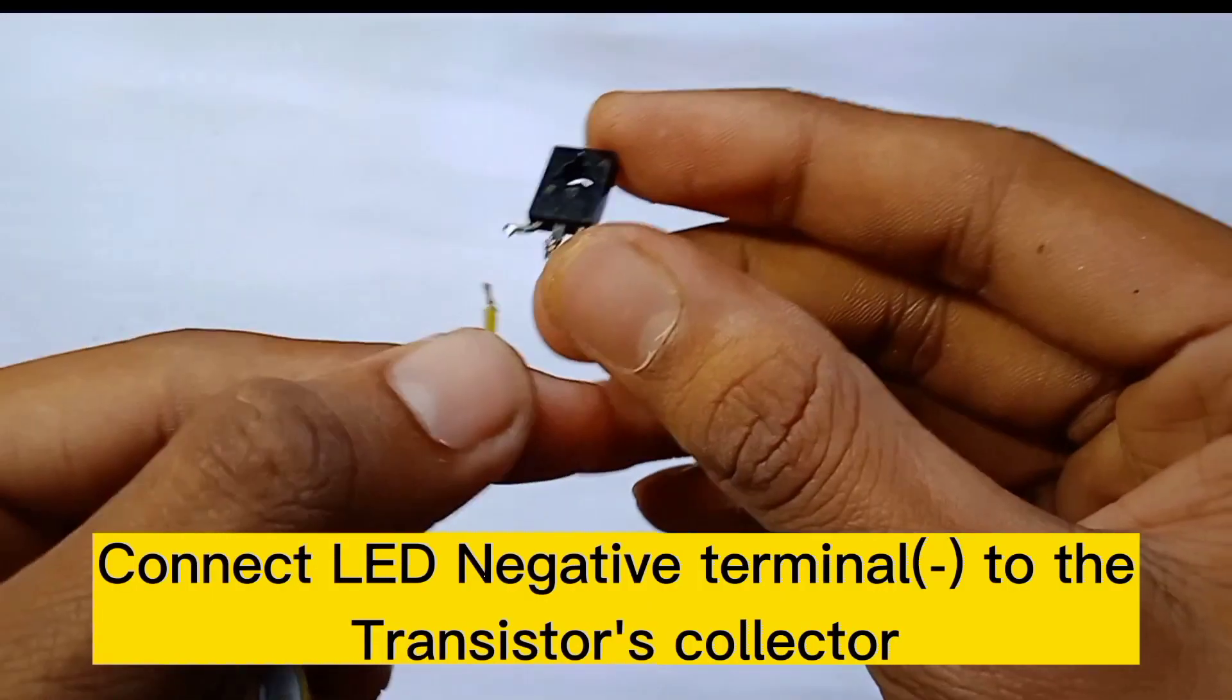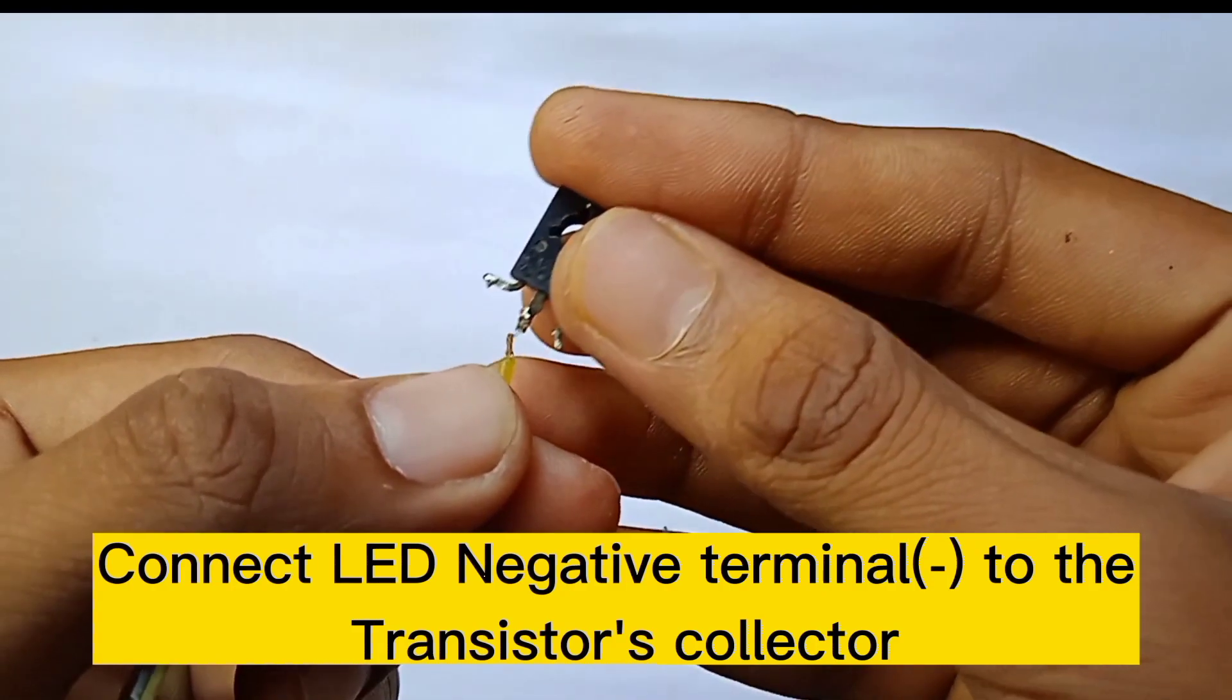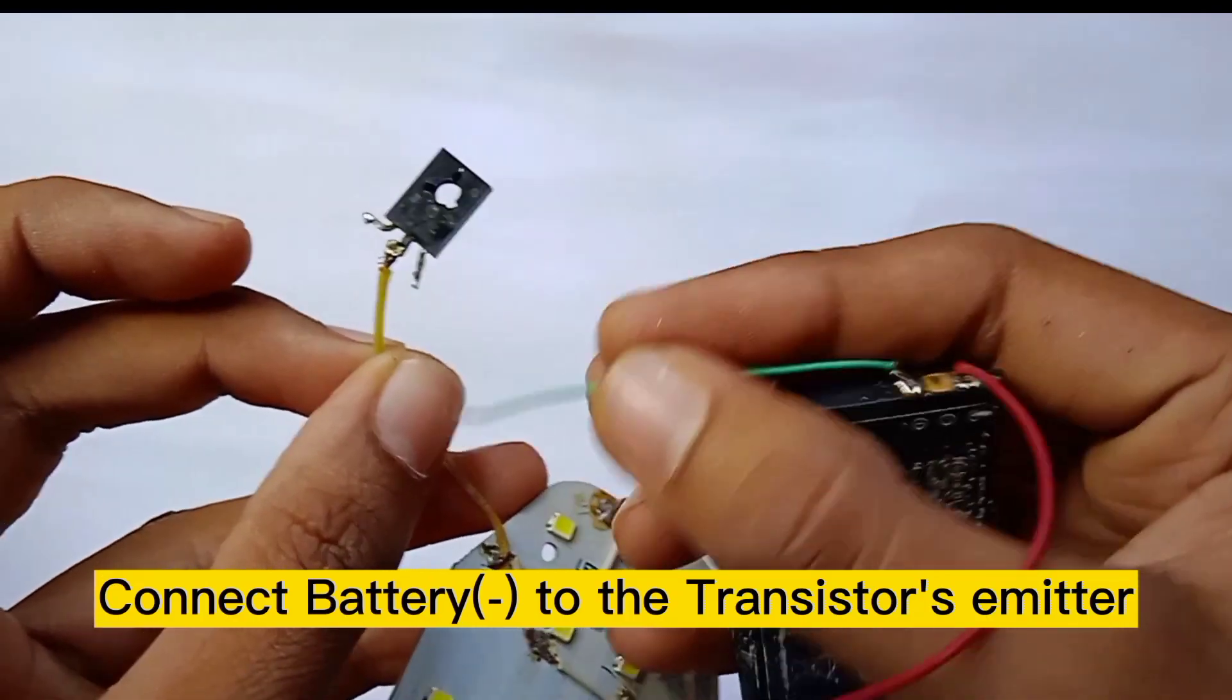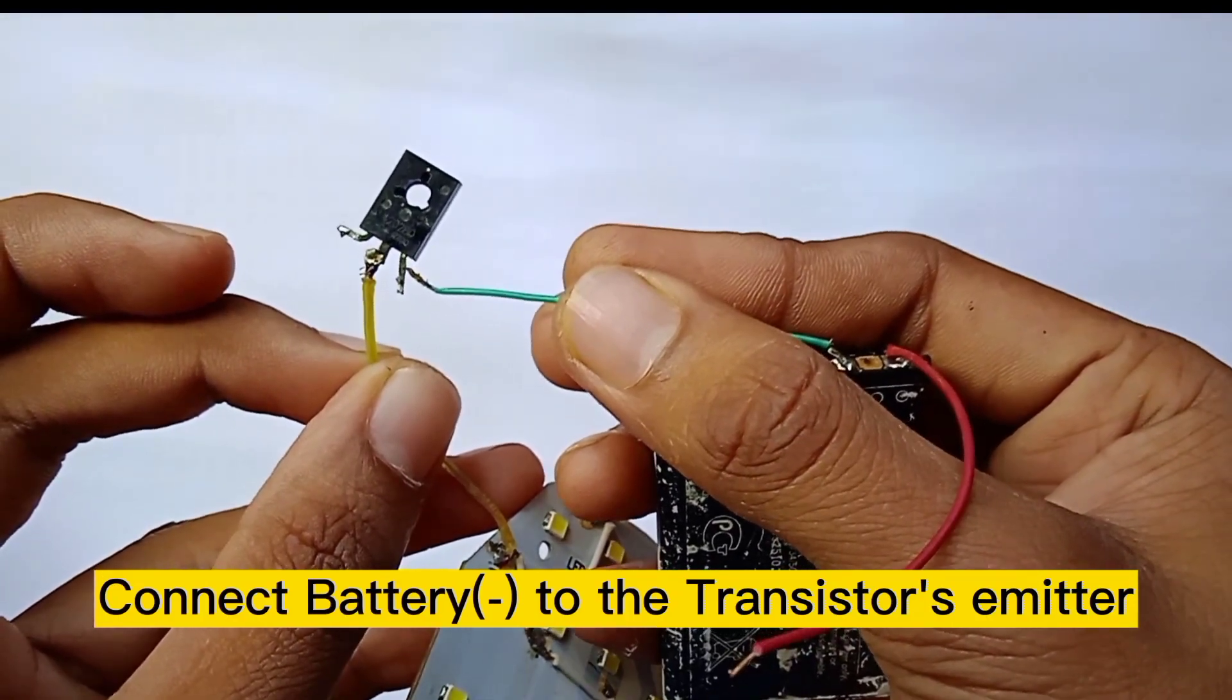Connect the LED negative terminal to the transistor's collector. Connect the battery negative terminal to the transistor's emitter.